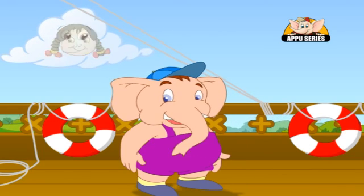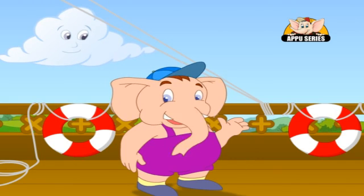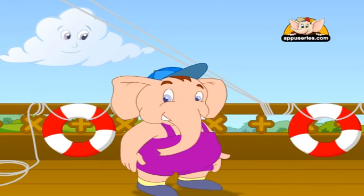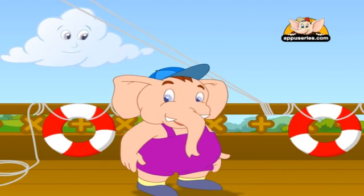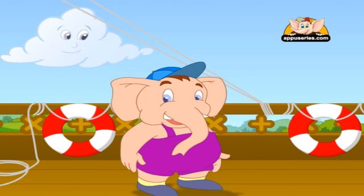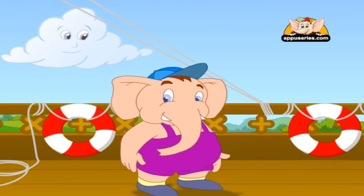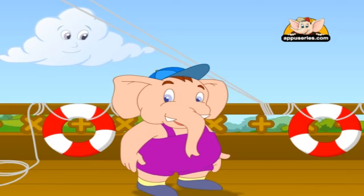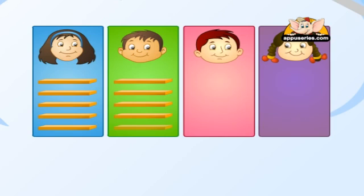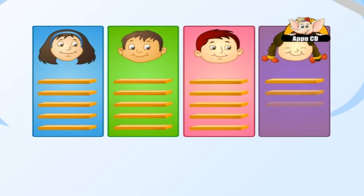Nina, David, Sam and Rose are 4 friends. They decided to collect 5 planks of wood each to make a tree house, but they were not too sure how many planks they would end up getting in total. Let's help them out by using multiplication. Now there are 4 friends and each is bringing 5 planks of wood.